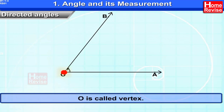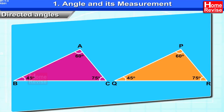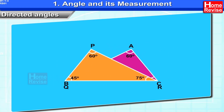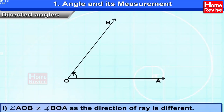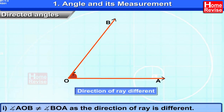O is called the vertex. Now consider two triangles with all three corresponding angles the same. If we try to put both triangles on top of one another, their corresponding angles will only fit or coincide due to the positions of the rays. Note: directed angle AOB is not equal to directed angle BOA, as the direction of the ray is different.